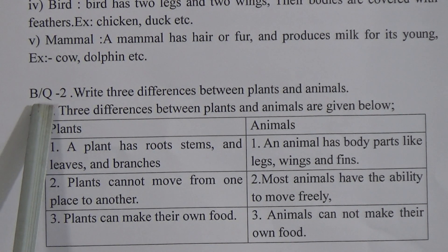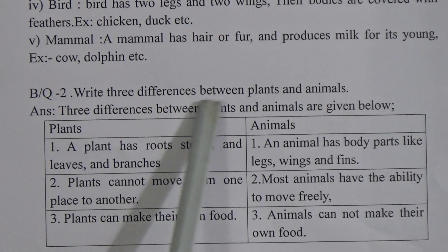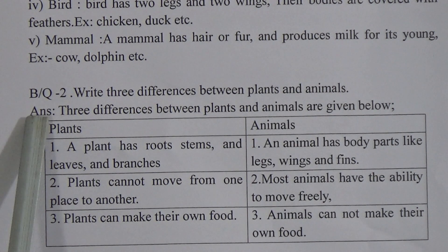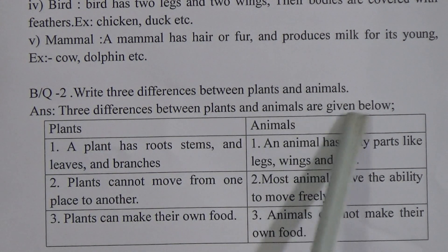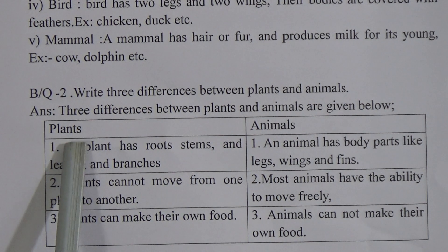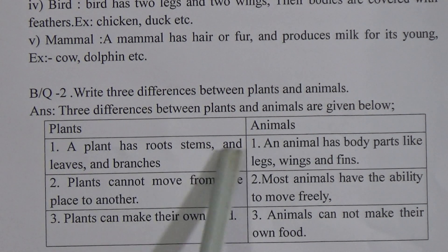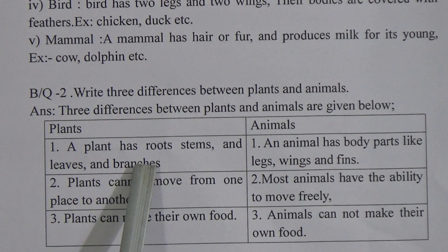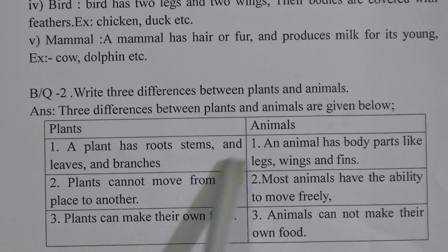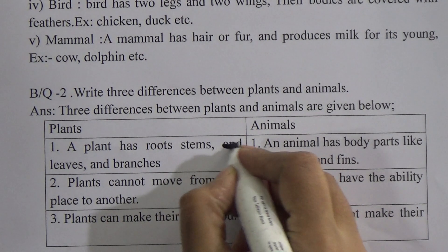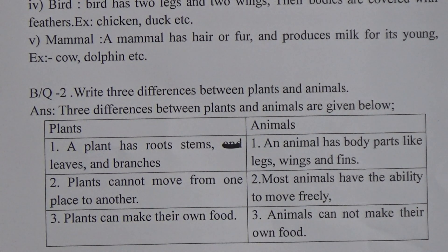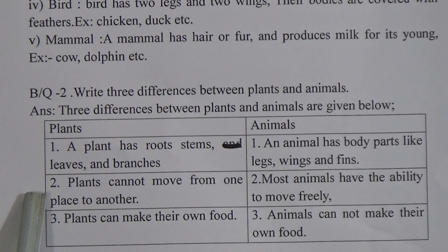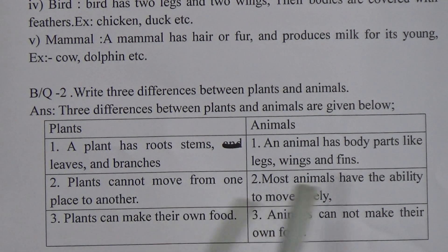Broad question number two: write three differences between plants and animals. First difference — a plant has roots, stems, leaves, and branches. An animal has body parts like legs, wings, and fins. Second difference — plants cannot move from one place to another, but most animals have the ability to move freely.